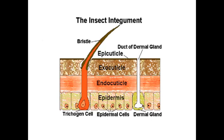Here is the insect integument diagram. The outermost layer of the cuticle is known as epicuticle. The middle layer is known as exocuticle. The inner layer is known as endocuticle. Together these form the cuticle, underlain by epidermal cells and a basement layer.